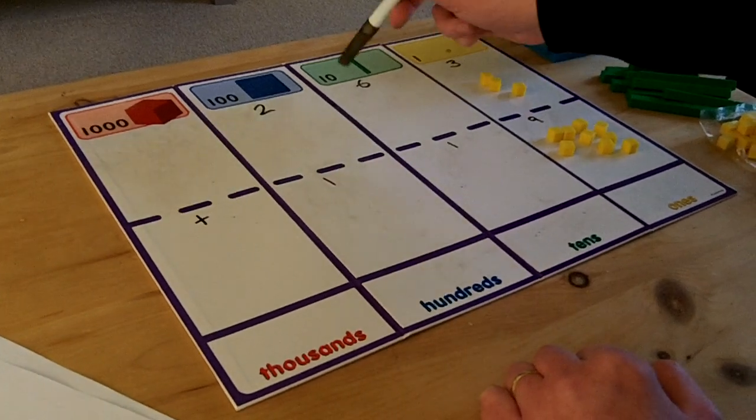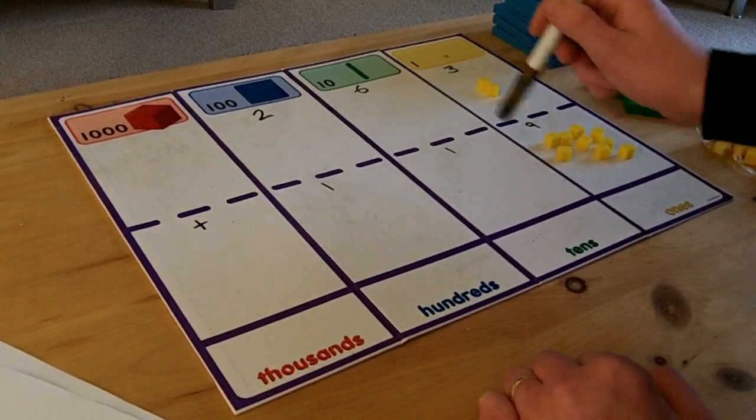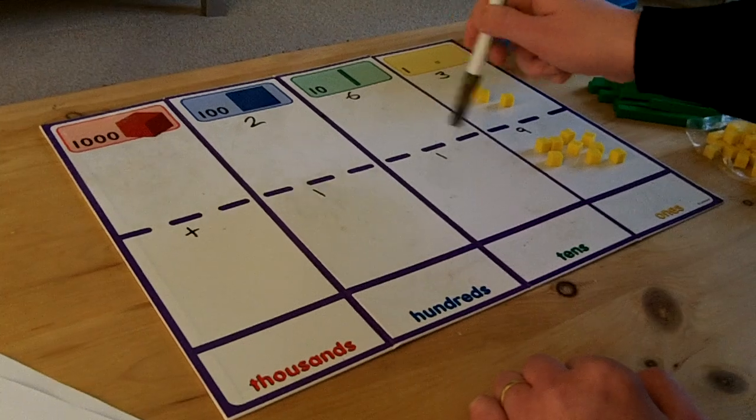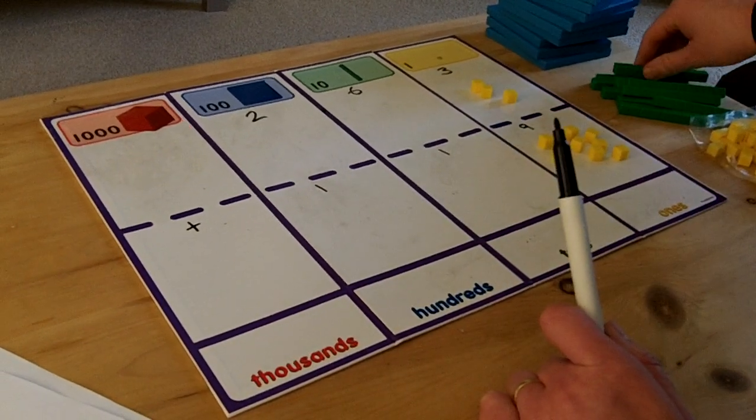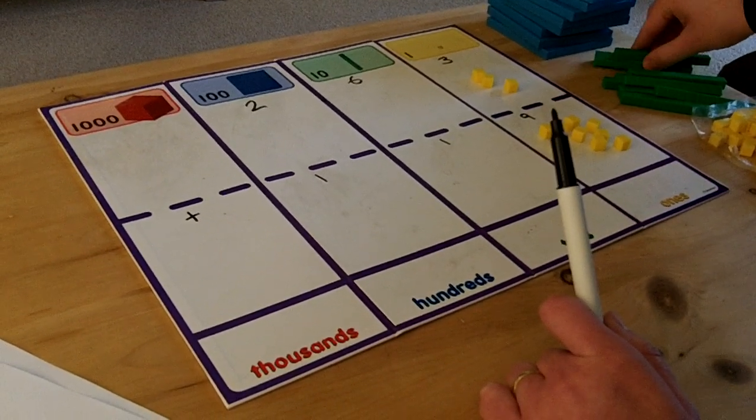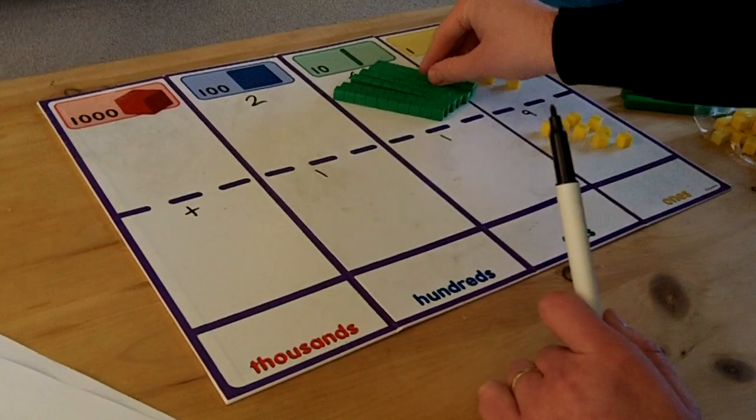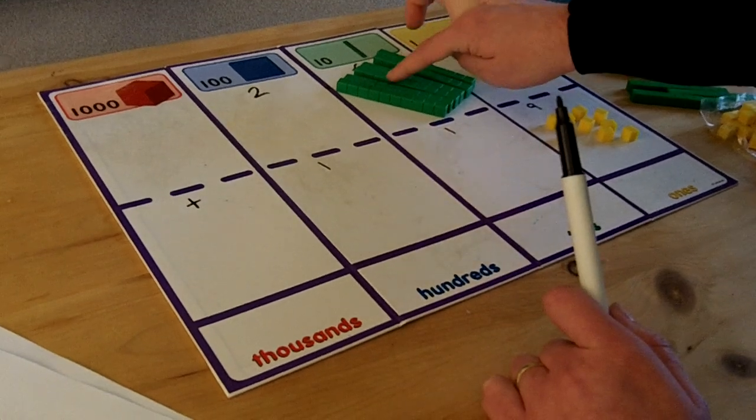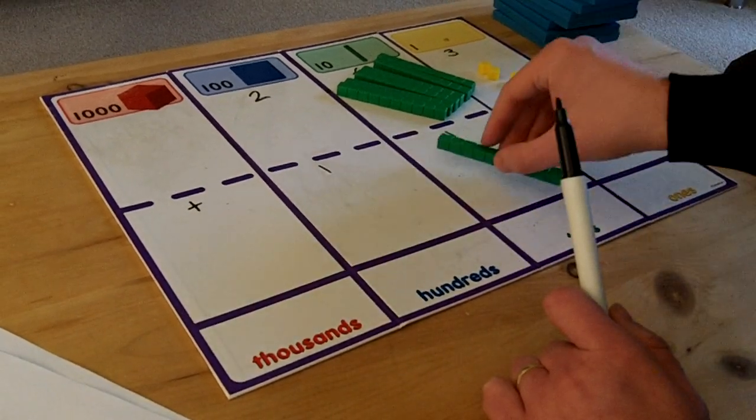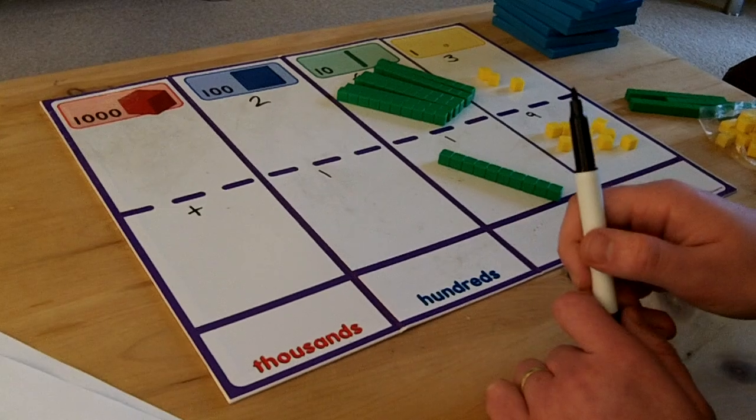In the tens column I have got 6 and 1. These represent 60 and 10 so I must use my rows of 10 cubes. I must put 6 on top of the 60. 1, 2, 3, 4, 5, 6 and 1 on top of the 10 to show this.